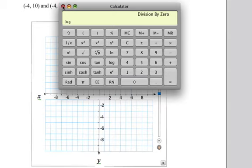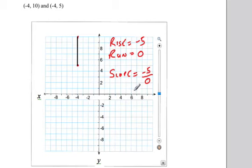There is no answer to negative 5 divided by 0, because this is not a real number. So we say that this is undefined.